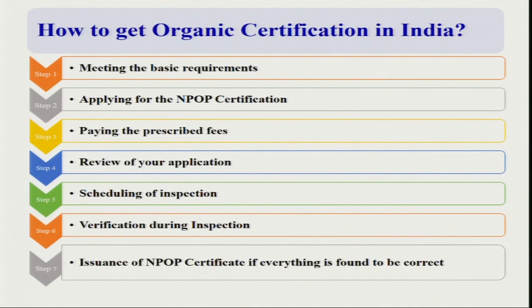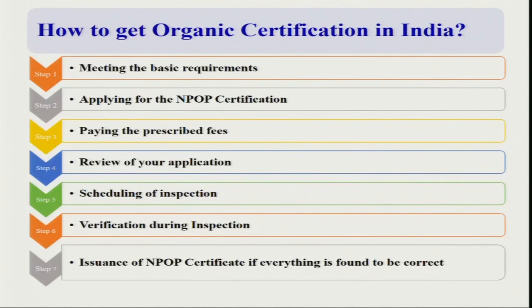There are two types of organic certification in India. The first is third-party certification or NPOP standard certification, which is very necessary because this standard is equivalent to the USA, European Union, and Switzerland systems. When a farmer or grower wants to sell produce in the international market, they must go for this NPOP certification. You have to meet basic requirements, apply for NPOP certification, pay the prescribed fee, then the application is reviewed and inspection is scheduled at different times — it is not only one time, and not fixed in which month they will come — so there is no chance for malpractice. Verification is done not only on the production side but also in post-harvest processing, value addition, packaging, storage, and transportation. After that, issuance of the NPOP certificate allows you to sell in the international market.